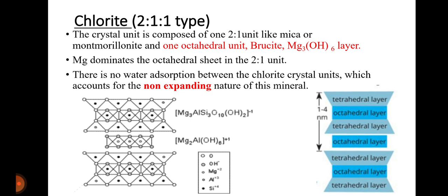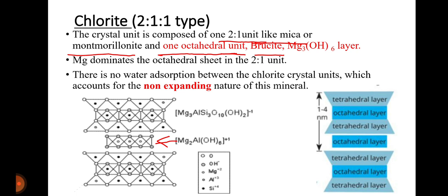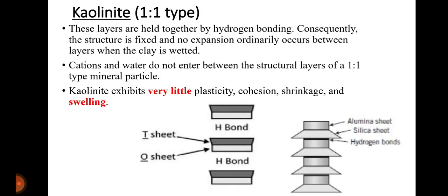Chlorite is also a non-expanding type mineral. Its structure is like the 2:1 type, similar to mica or montmorillonite, but there is one additional octahedral layer called the brucite layer. Magnesium dominates the octahedral sheet in this 2:1 type mineral. There is no water absorption between the chlorite crystal units, so it is a non-expanding type of clay mineral.